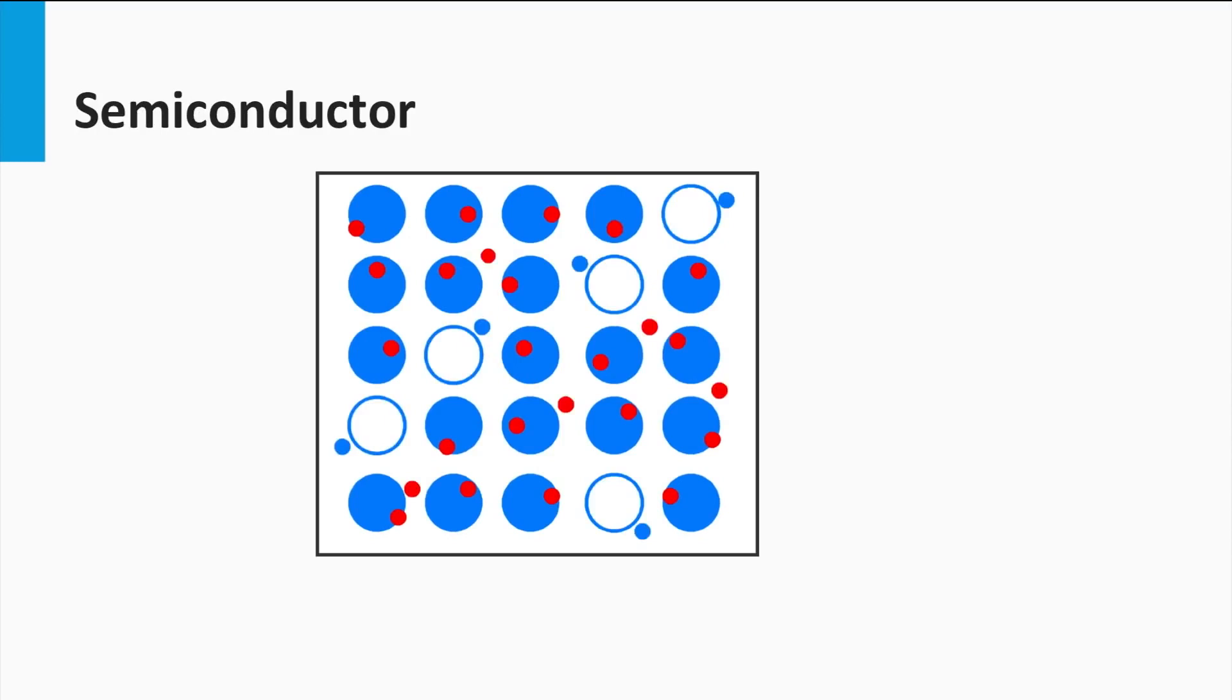Semiconductors are materials which have a conductivity between that of a metal and insulator. The outer electrons of the atoms are more strongly bound to the background atoms than in metals, but under certain conditions, some of the electrons can leave their background atoms and become freely mobile electrons as well.